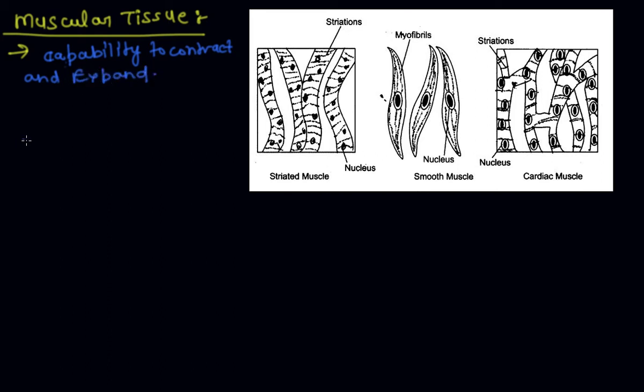Due to contraction and expansion, muscles facilitate various kinds of movement in the body. Muscular tissues are of three types: the first one is striated muscles, the second one is smooth muscles, and the third one is cardiac muscle.